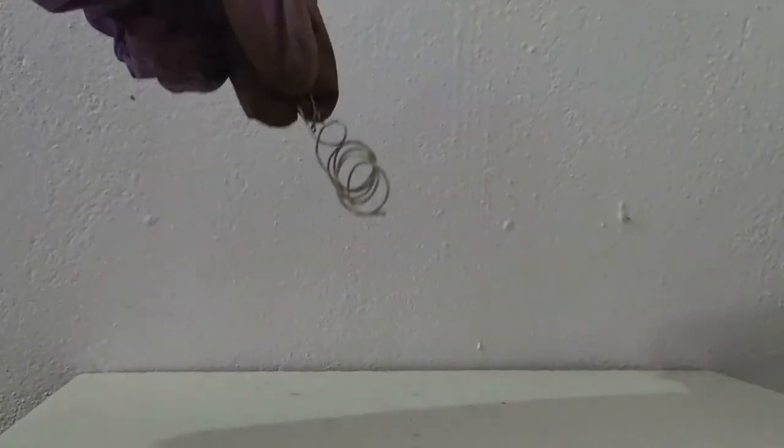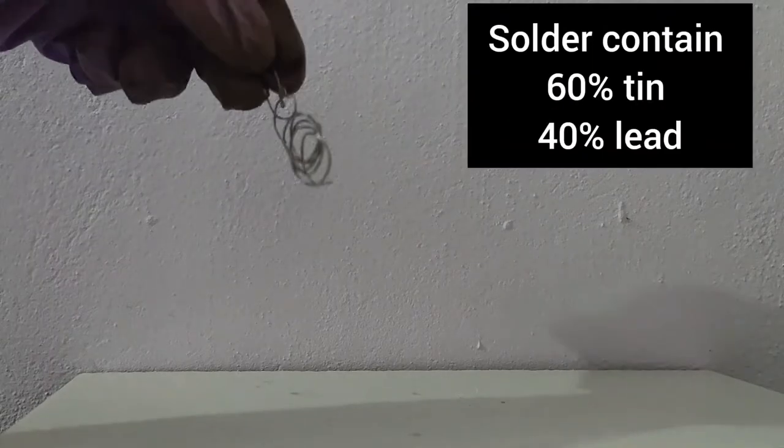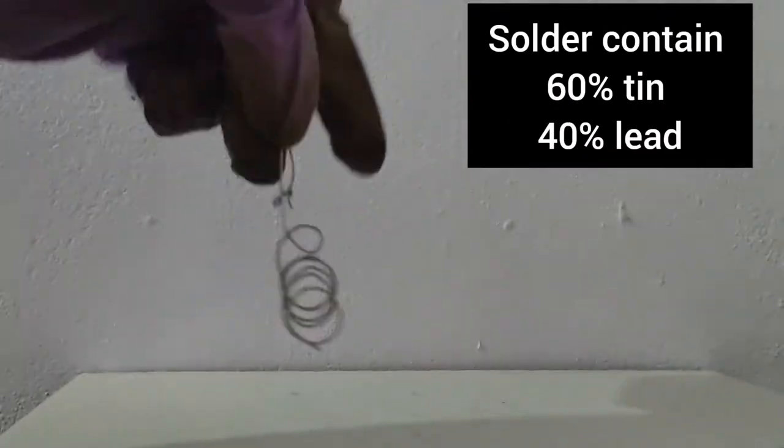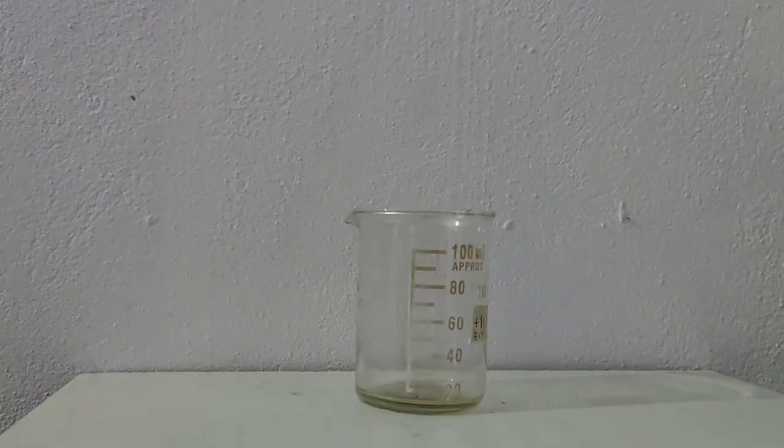Today, I will be extracting tin metal from solder wire. So over here I have solder wire. Solder contains 60% tin and 40% lead. So on basis of that, I am going to extract tin.